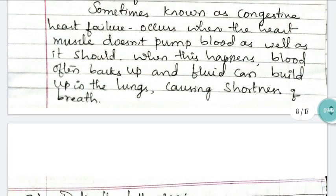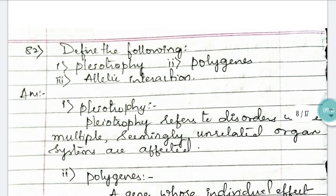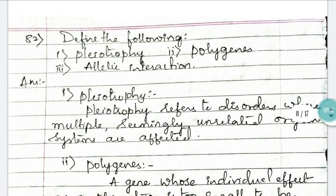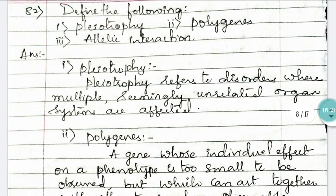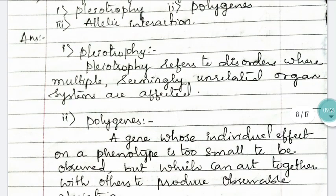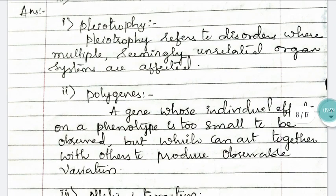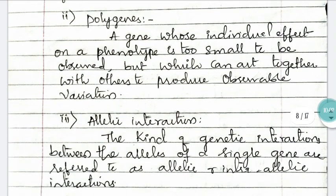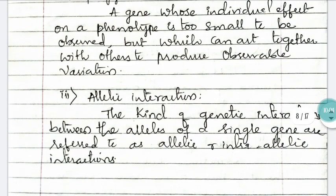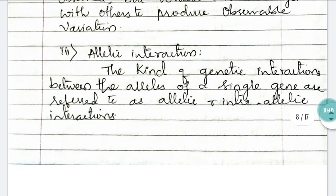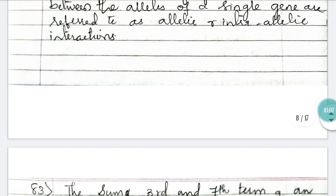Question 82: define the following three terms — pleiotropy, polygene, and allelic interaction. I have given the answers clearly on the slide. You need to define all three terms — just go through them carefully.